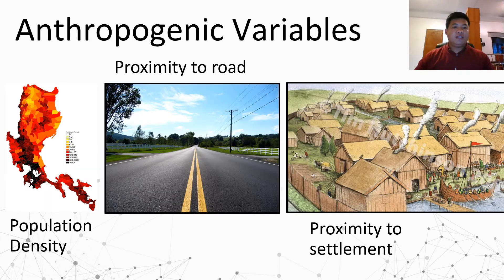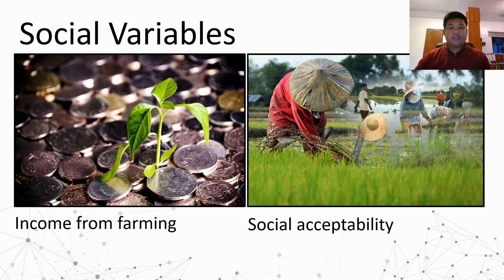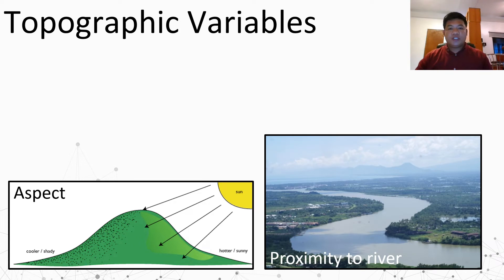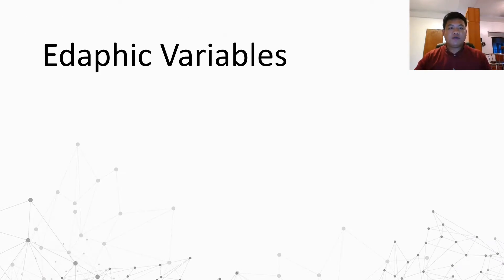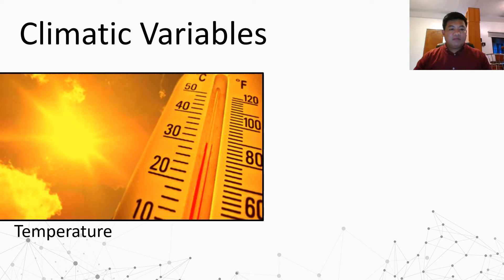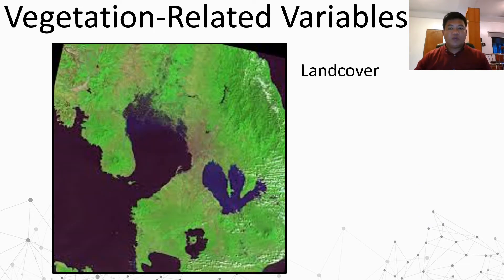Let's take a look at the different variables used to develop the GIS-based ALCAMS. For anthropogenic variables, we have population density, proximity to road, and proximity to settlement. For social variables, we have income from farming and social acceptability. For topographic variables, we have aspect, proximity to river, elevation, and slope. For edaphic variables, we have soil fertility and soil type. For climatic variables, we have temperature and precipitation or rainfall. And lastly, the vegetation-related variable is land cover.